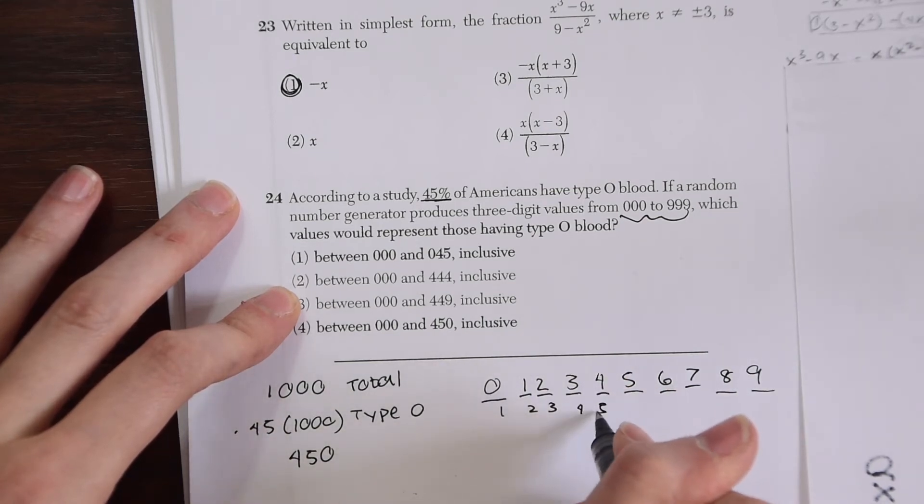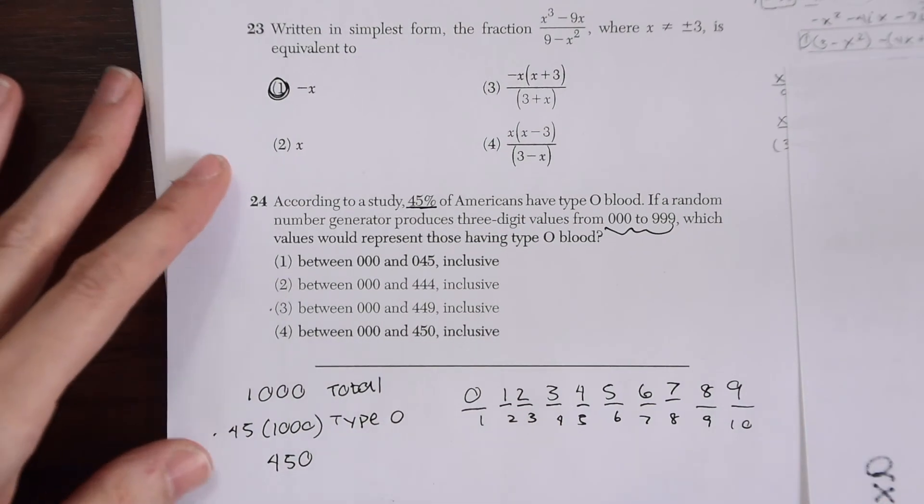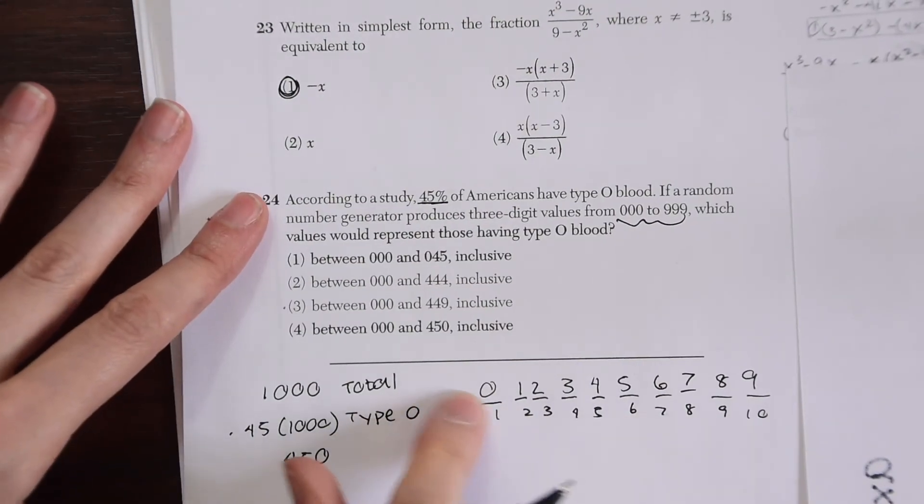1, 2, 3, 4, 5, 6, 7, 8, 9, 10 total numbers. So it's one more than what you think it might be because of that zero.